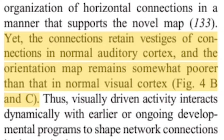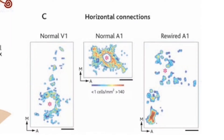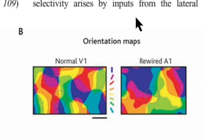First, this was done just after the animals were born, when their brains were still developing and therefore highly plastic. Second, while the rewired auditory cortex underwent considerable reorganization of neuronal connections in a way that supported the processing of visual information, Sur explained in a 2005 article that the connections retained vestiges of normal auditory cortex and the orientation map remained somewhat poorer than in normal visual cortex. So these ferrets could see, but not as well as if they had normal brains.